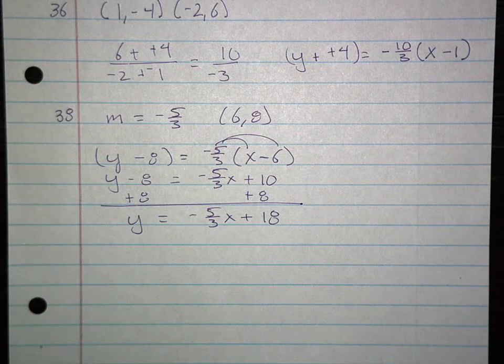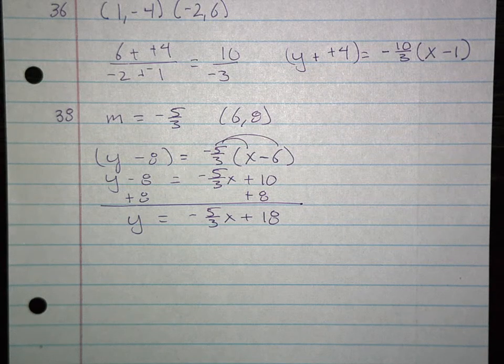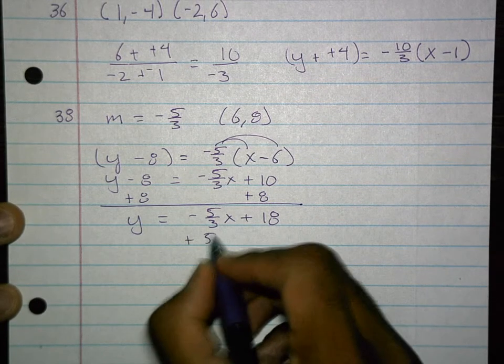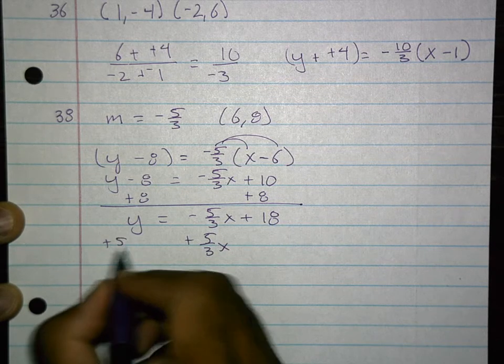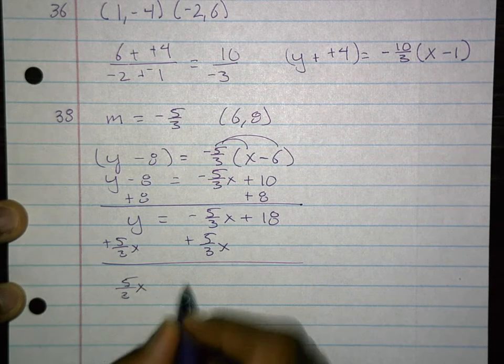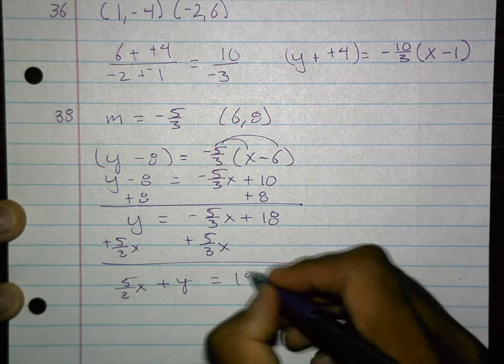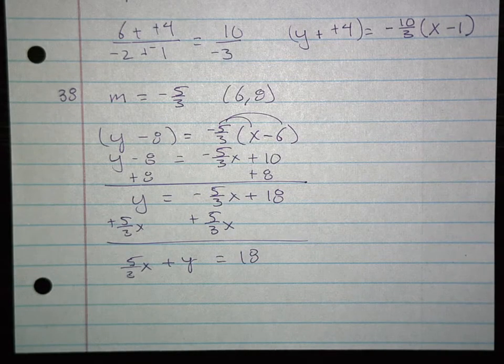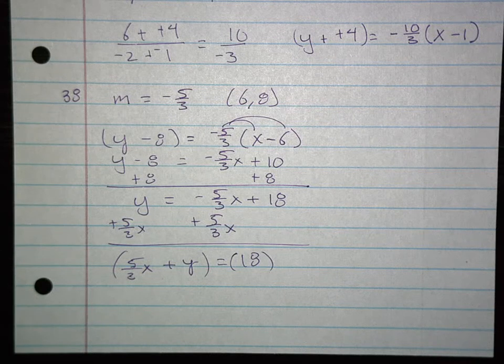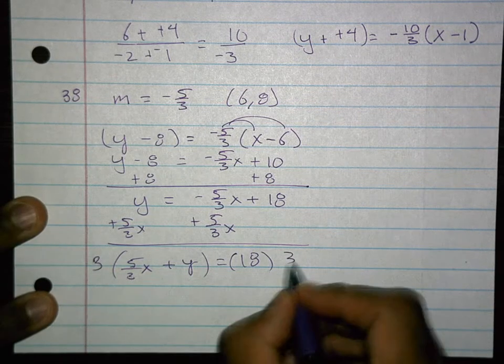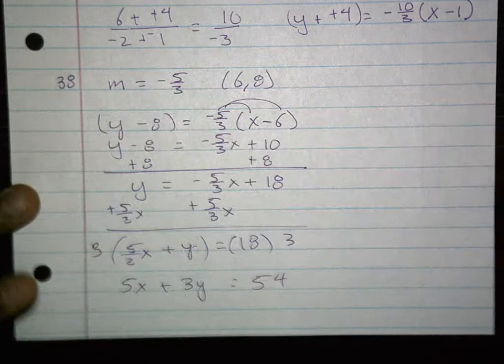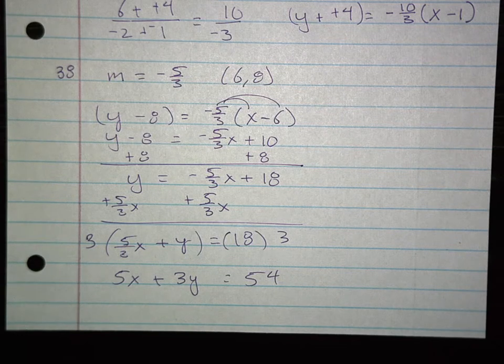Now this is slope intercept, not standard. So I'm going to need to clear the fraction. I've got 5 thirds x plus y equals 18. Now I multiply everything by 3, and that will clear the fraction. I'm looking at 5x plus 3y equals 54. There's my standard form. People always forget that this term cannot be negative.